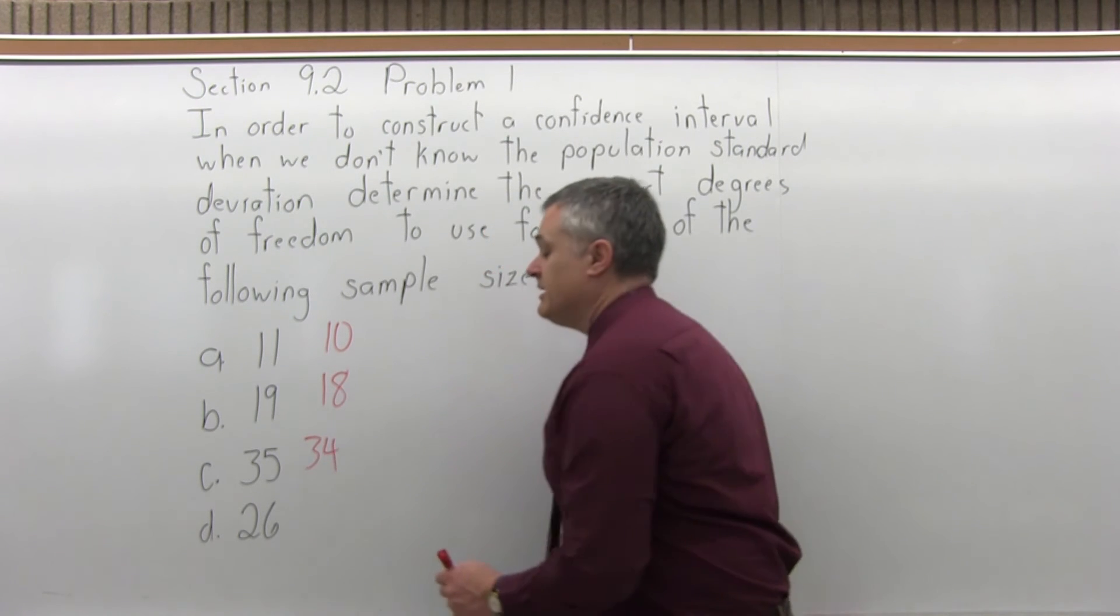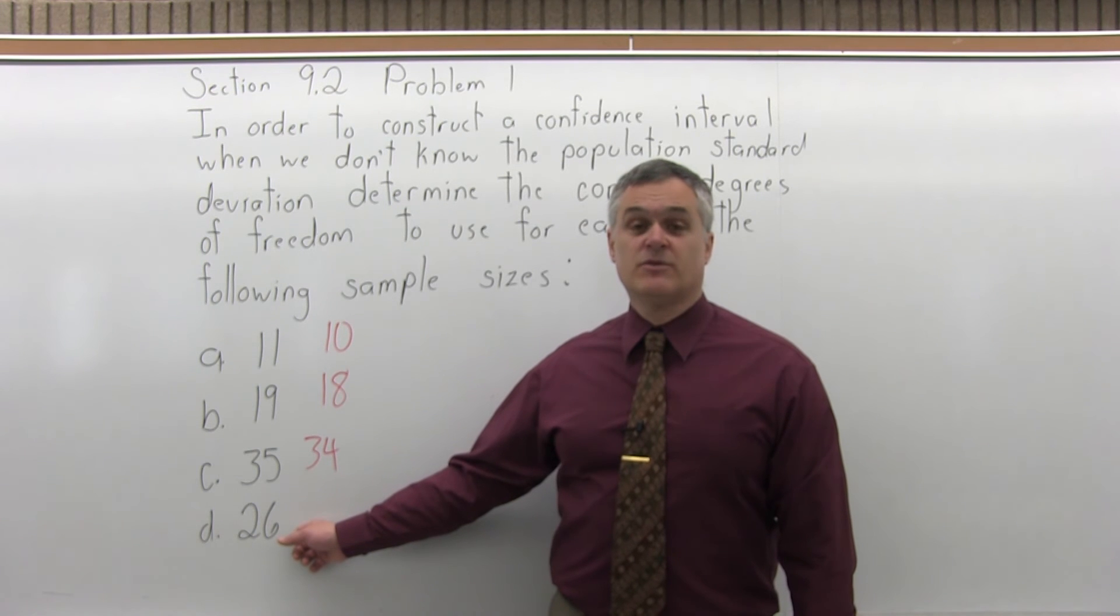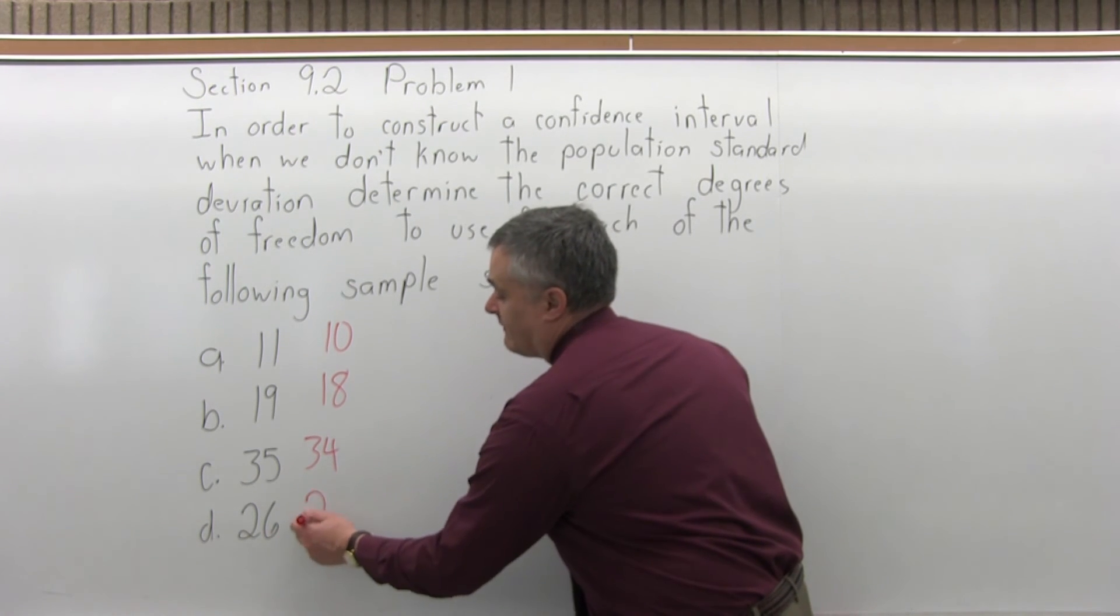And finally, part D, if the sample size is 26, the number of degrees of freedom would be one less. It would be 25.